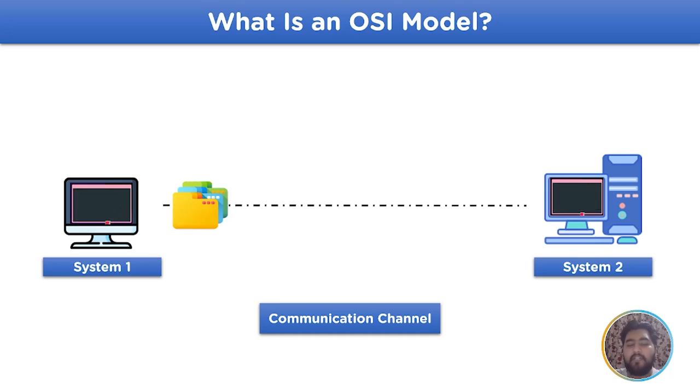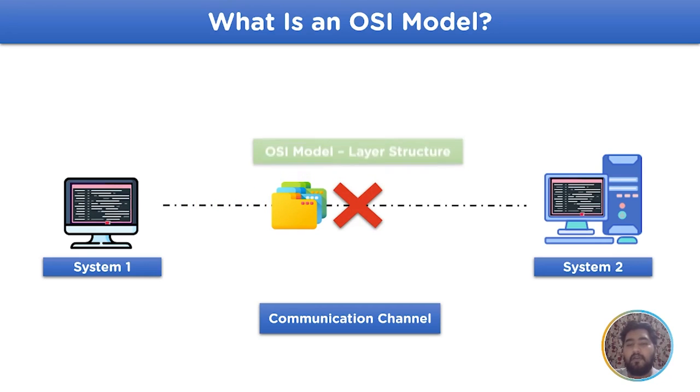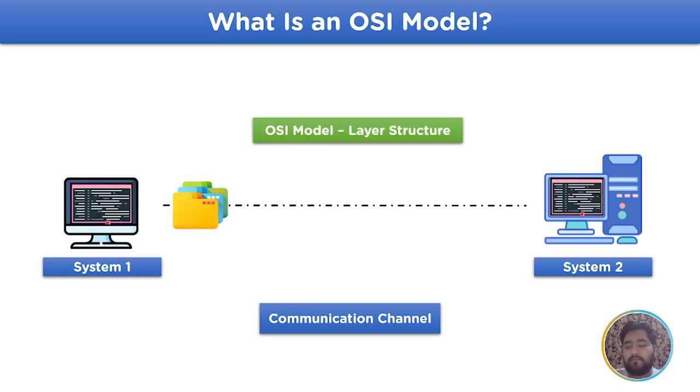Let us assume that we have different operating system for the network channel. To overcome such situation where the data cannot be transferred due to the different OS in the system, OSI model is used which uses the seven layer structure to allow the conversion of data from the upper model to the data that is to be transferred.